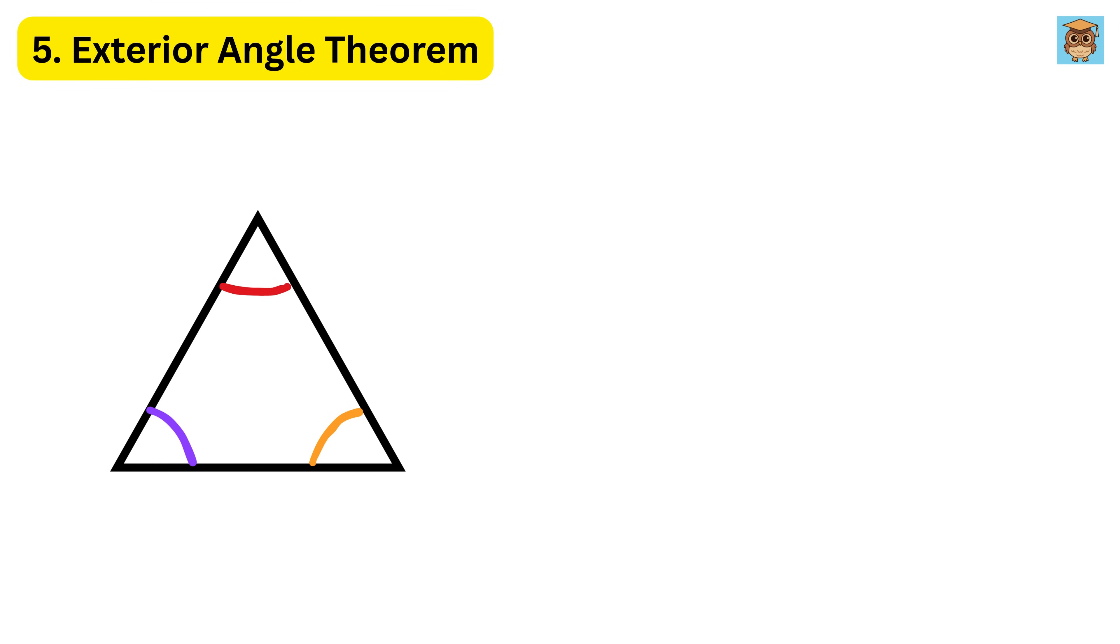5. Exterior Angle Theorem. Here's a fun one. Draw a triangle and pick one corner. Now, extend one side past that corner to make a new angle outside the triangle. That's the exterior angle. This outside angle has a neat trick. Its size equals the sum of the two inside angles that aren't next to it.